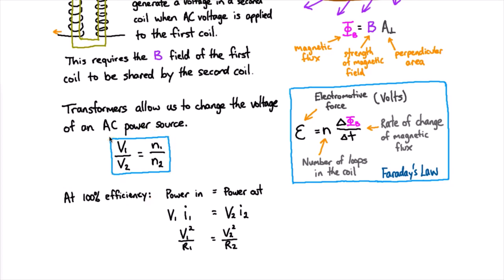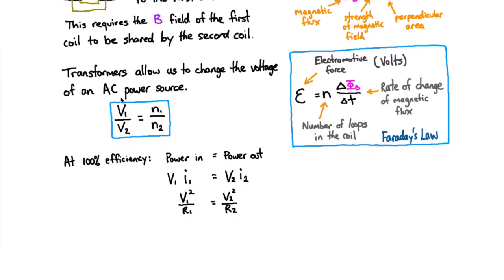So that's telling us something very important about how to build a transformer so that it works efficiently. You have to carefully match the resistance of the power source and the first coil with the load and the second coil in order to satisfy both equations at the same time. That's the only way you can get 100% efficiency.